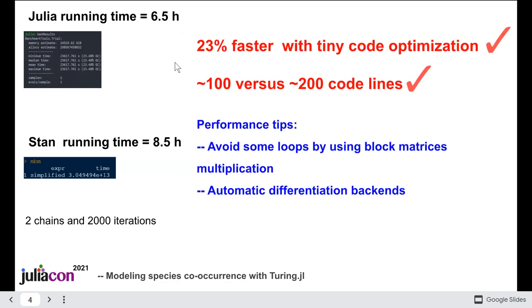However, despite we didn't carry out deep code optimization, Julia was faster than STAN, reducing running time by 23 percent and using less code lines.